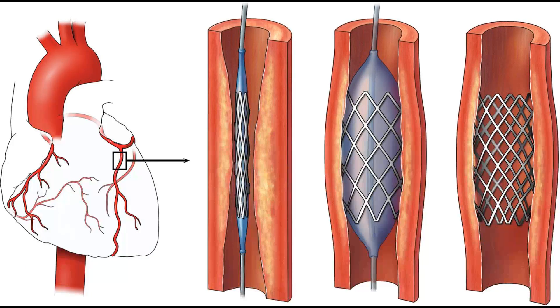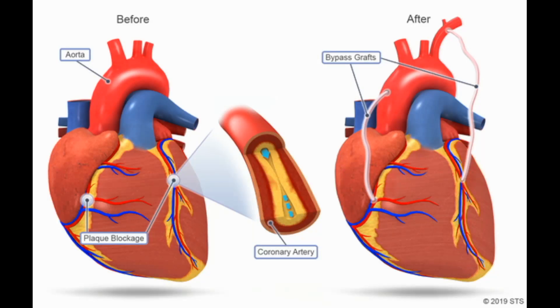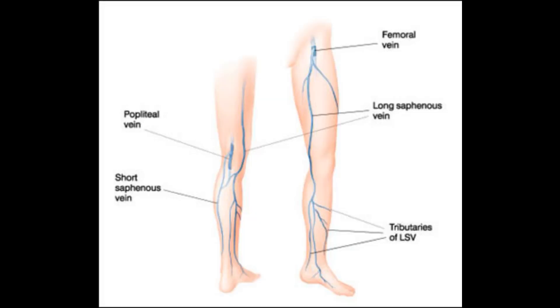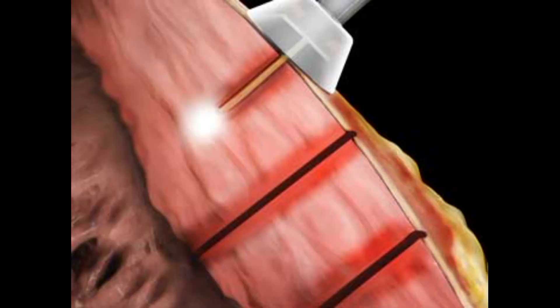Percutaneous transluminal coronary angioplasty is a technique of dilating coronary stenosis by passing an inflating balloon inside the stenosis along with a stent; it is inserted through the radial or femoral artery. Coronary artery bypass grafting uses the internal thoracic artery commonly for bypassing blood supply; the long saphenous vein is also used but rarely. Trans-myocardial laser revascularization uses a laser to make small holes in the myocardium to allow direct perfusion from blood within the ventricular cavity.